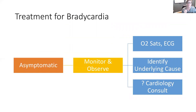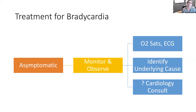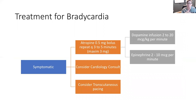Treatment for bradycardia — symptomatic versus asymptomatic. If they have no symptoms, we monitor and observe: keep them on the monitor, check in with them, do their LOC and vital signs, check oxygen saturations, and do repeat ECGs. The key is to identify what the cause is — is this a drug, an illness, or a normal physiological response because they run 25 kilometers every day? We consult cardiology to make sure we don't miss anything. If they are symptomatic — meaning signs of decreased cardiac output, changes in LOC, respiratory rate, cardiovascular system, decreased output, sweating, fainting — we want to increase the heart rate.